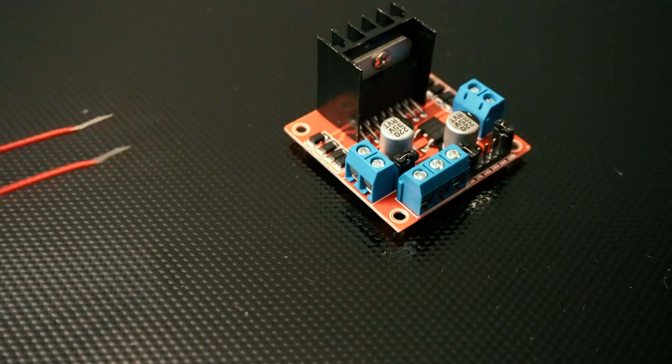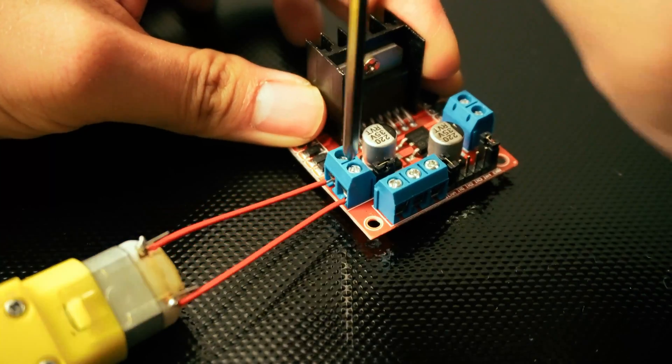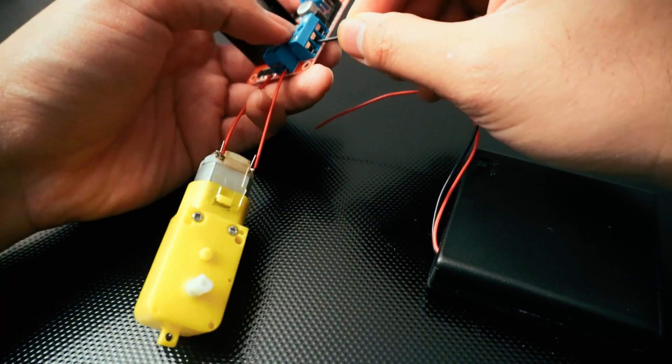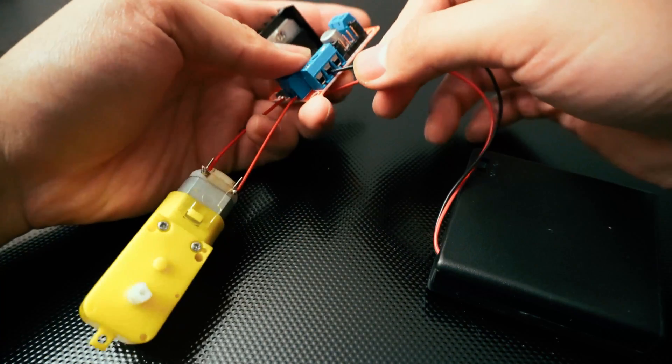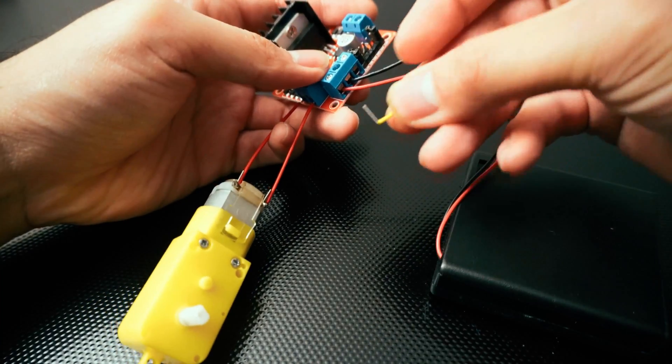Let's look at some examples. If we're driving these 6V motors, power is needed for both the driving and the logic. Here I connected four AA batteries into the 12V and ground terminals, and also a jumper to connect both 12 and 5V.